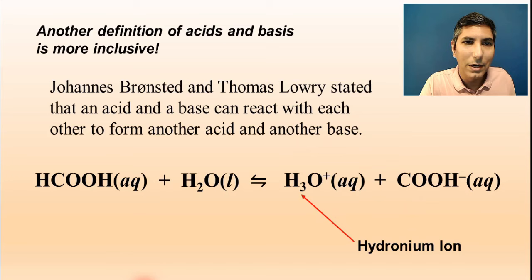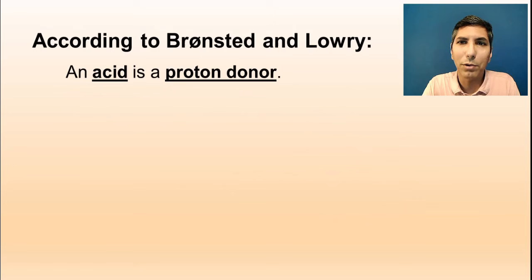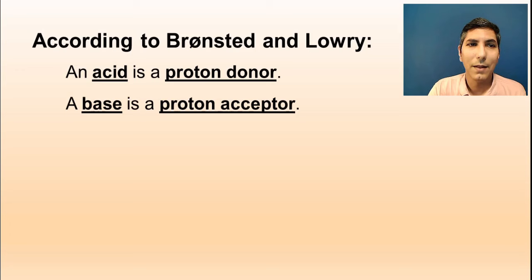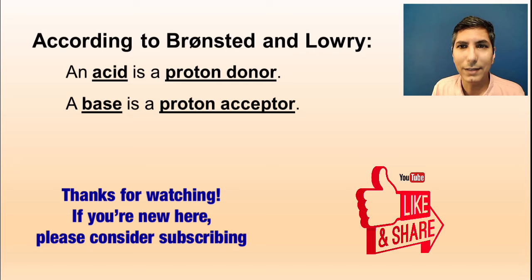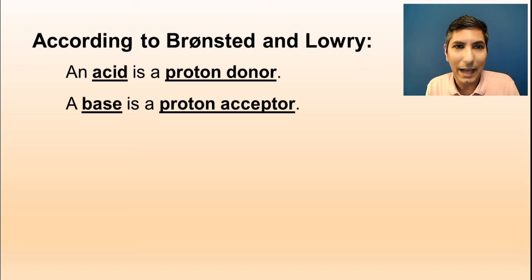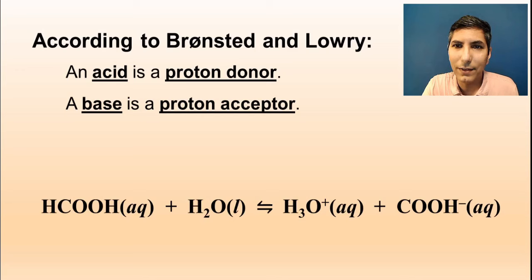Now, according to Bronsted and Lowry, an acid is a proton donor. That's all that an acid is. It's a proton donor. And likewise, a base is a proton acceptor. Now, before we go too far into this, it would be helpful to know that when we say proton, a proton is just an H plus ion. If you know that, that actually makes your life a whole lot simpler. An acid is an H plus donor. A base is an H plus acceptor.